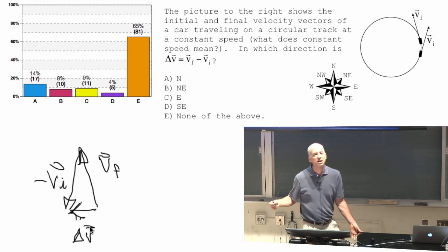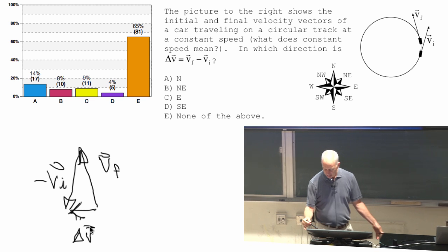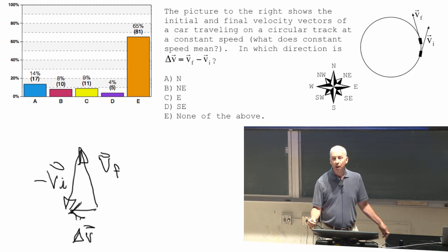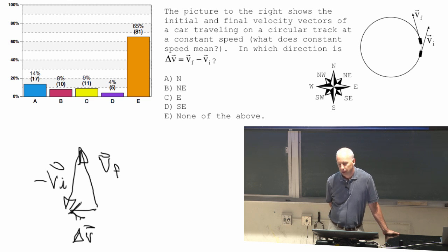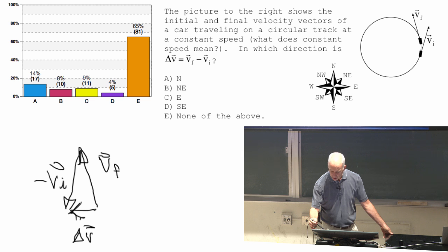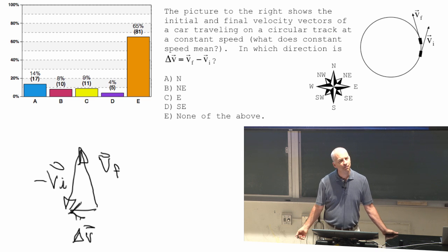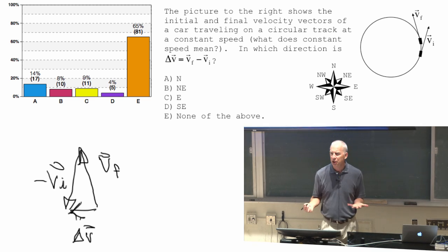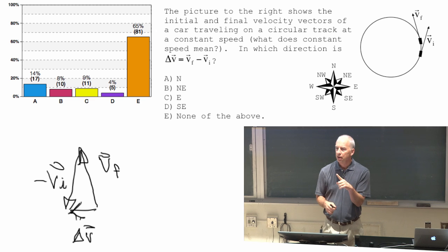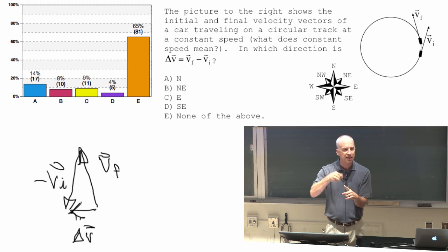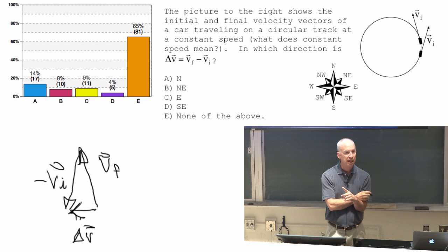You also could have used the words that I was using back here. I said that v-initial is north and to the east, and v-final is north and to the west. So you say, well, how did v change? v-initial was north and to the east, v-final is north and to the west. The north part is still there. In fact, it's the same amount in each case.